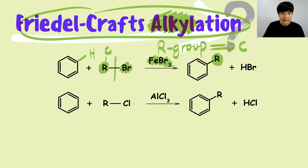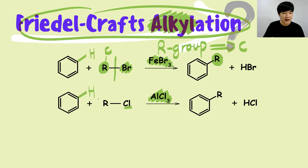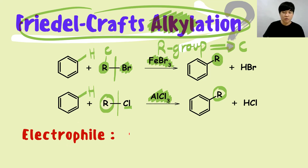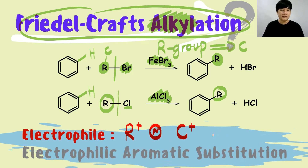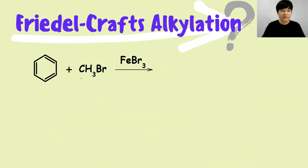If you're using Cl, the catalyst is AlCl3; if using Br, the catalyst changes accordingly. The R group attached to the halogen substitutes the hydrogen on the benzene ring. The electrophile here is R⁺, a carbocation. This is all still under electrophilic aromatic substitution.